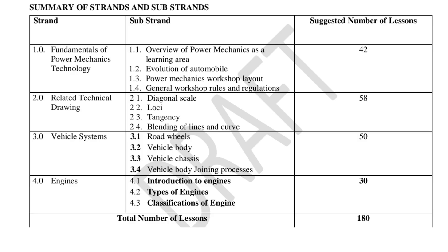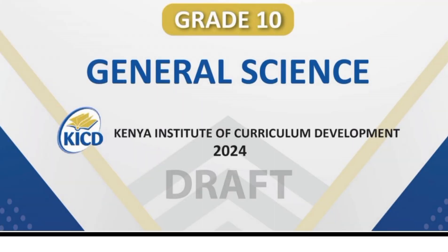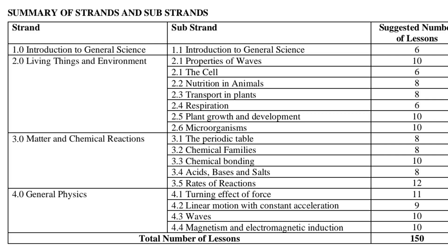Let's dive into general science, which has four strands. The first strand is introduction to general science, with one substrand of the same name. The second strand is living things and environment, covering: properties of waves, the cell, nutrition in animals, transport in plants, respiration, plant growth and development, and microorganisms.